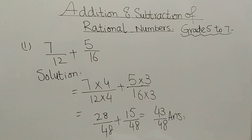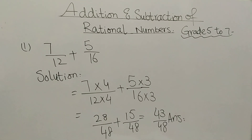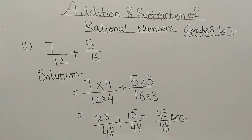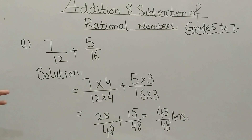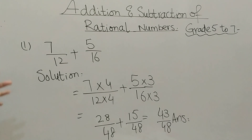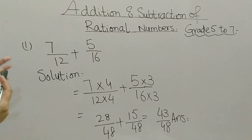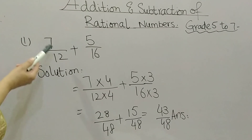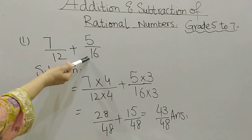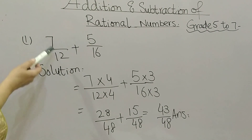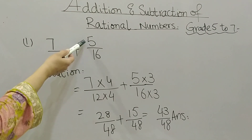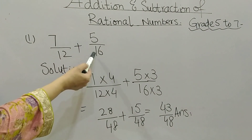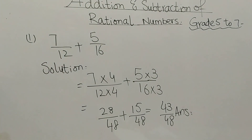Assalamu alaikum dear students. Today we are going to learn addition and subtraction of fractional numbers. These are questions which students from grade 5 to 7 can learn. Here you can see these numbers are written in fraction form — it is 7 by 12 plus 5 by 16. You can see these two numbers at the bottom; they are called denominators.